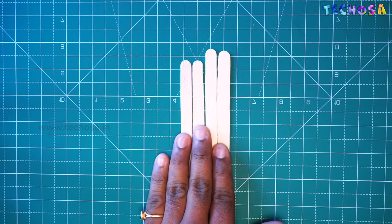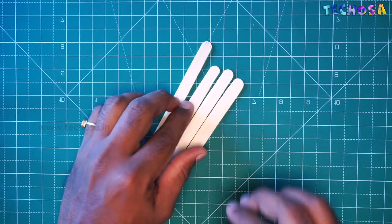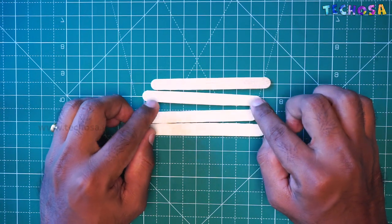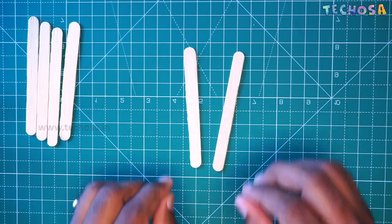Now let's check how to make a pedal board. For that, first take four ice cream sticks like this. Now replace that and take two more sticks.